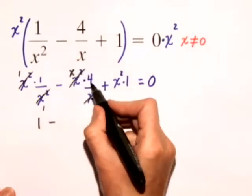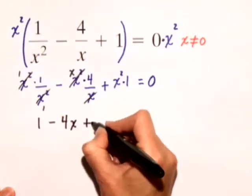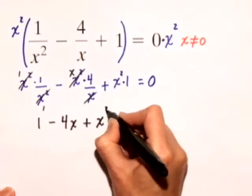So I have minus x times 4, and I'll write that as 4x, plus x squared times 1 is just x squared, and that's equal to 0.